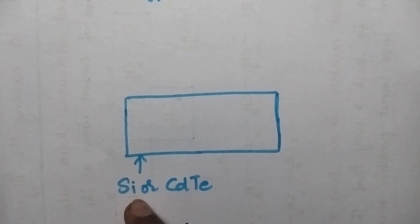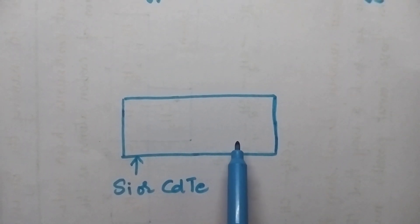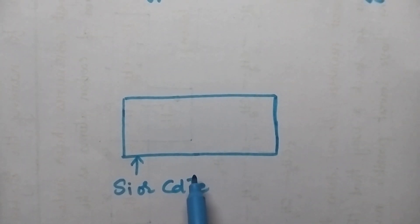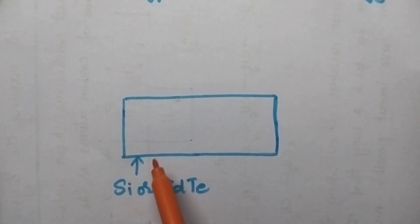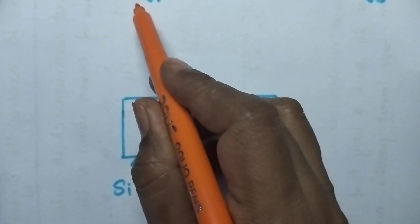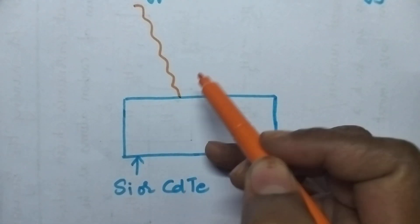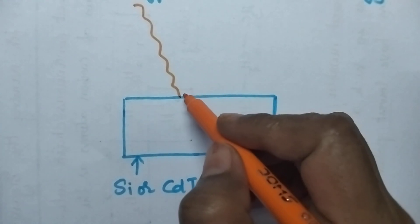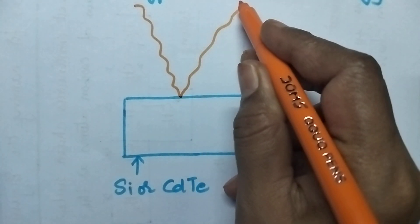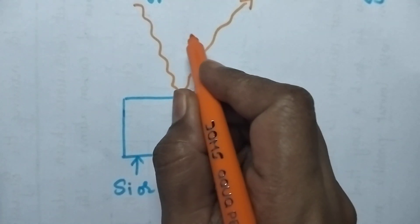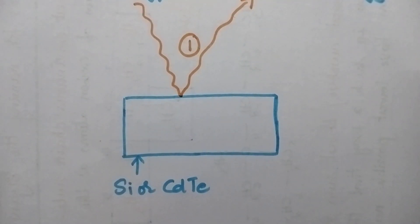Single crystal of silicon means all the crystals of silicon will have the same dimensions. Whenever a photovoltaic cell is exposed to solar radiations, there are three possibilities. Whenever the solar radiation hits the photovoltaic cell, there is a probability that it may be reflected back.